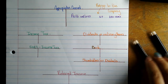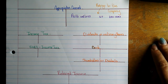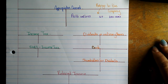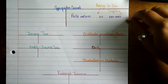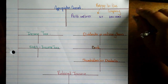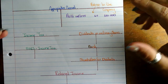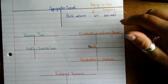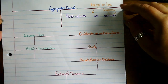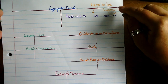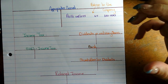G'day Grade 12s, let's just look at a quick summary of what we learned in class today. We talked about dividing the profit of a company. Please remember that the profit a company makes will belong to the company, because the company is its own business entity.